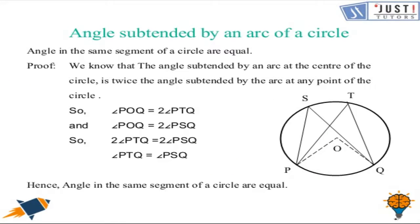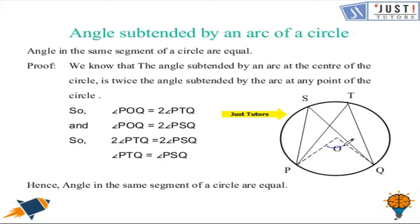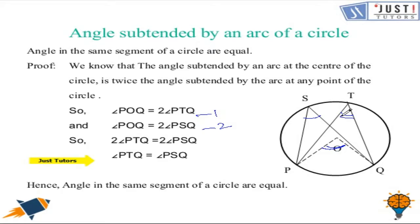So angle POQ will also be twice of angle PTQ. The next property states that angles in the same segment of a circle are equal. To prove this, we know that angle POQ will be twice of angle PTQ, and similarly angle POQ will also be twice of angle PSQ. Equating both equations, we find that angle PTQ equals angle PSQ. Hence we have proved that angles in the same segment of a circle are equal.